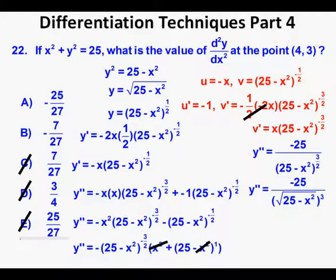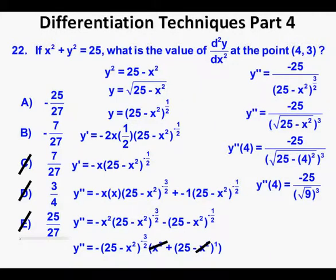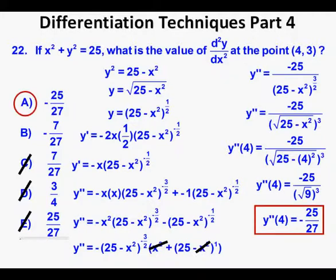Rewriting the denominator in radical form: y'' = −25 / [√(25 − x²)]³. Plugging in x = 4: y''(4) = −25 / [√(25 − 16)]³ = −25 / [√9]³ = −25 / 3³ = −25/27. We box in our correct answer and circle answer choice A. On the AP test, once the numerator works out to −25, that's enough to circle A immediately.